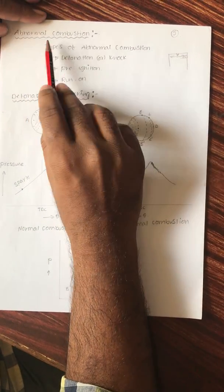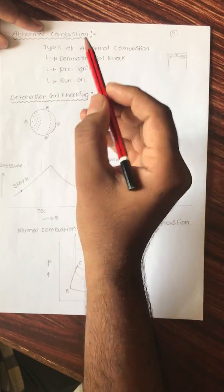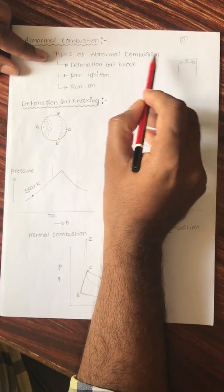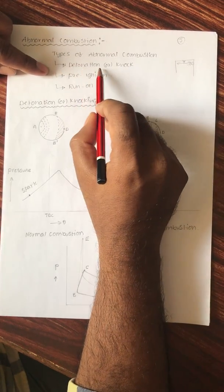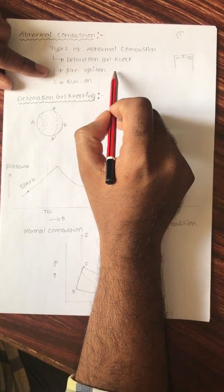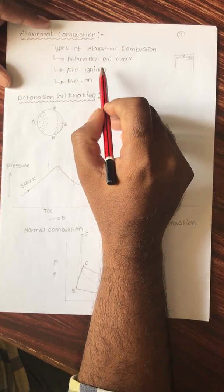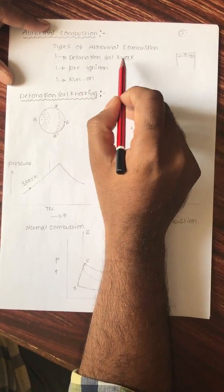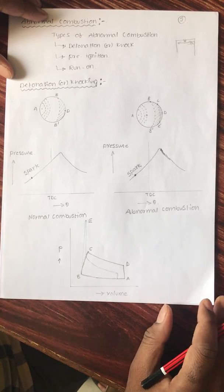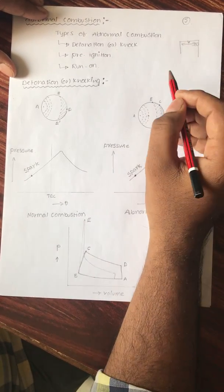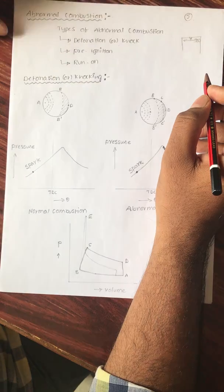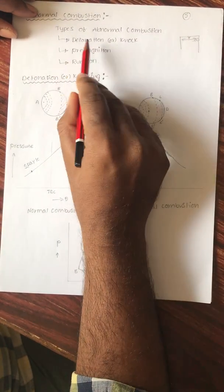There are different types of abnormal combustion. The first is detonation or knocking combustion, the second is pre-ignition, and the third is run-on. Of these three, detonation or knocking is the most dangerous and the most important for an engineer to understand when developing any kind of engine.